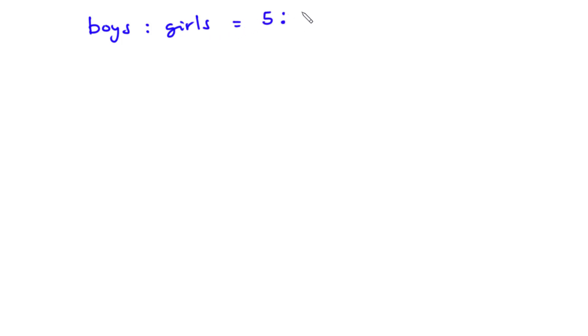In today's video we are going to start a new topic — ratio, rates and proportion. A ratio is used to compare things; it tells us how many times one number contains another. For instance, if we have five boys in a class and eight girls, then we say the ratio of boys to girls is five to eight. The colon sign means 'to', so boys to girls is five to eight.